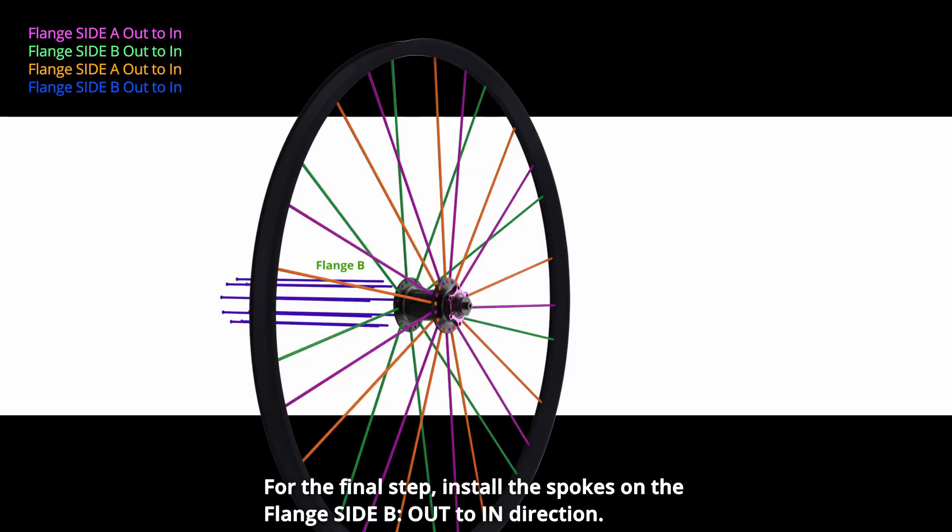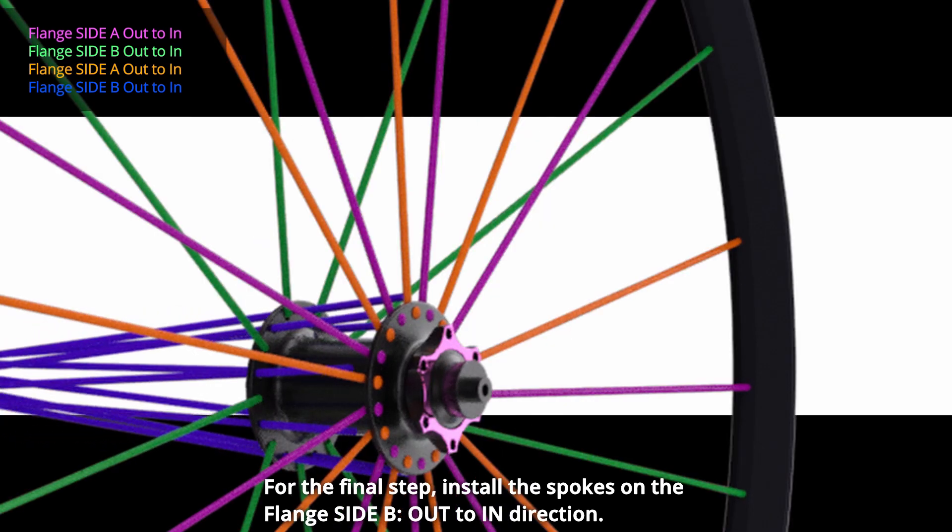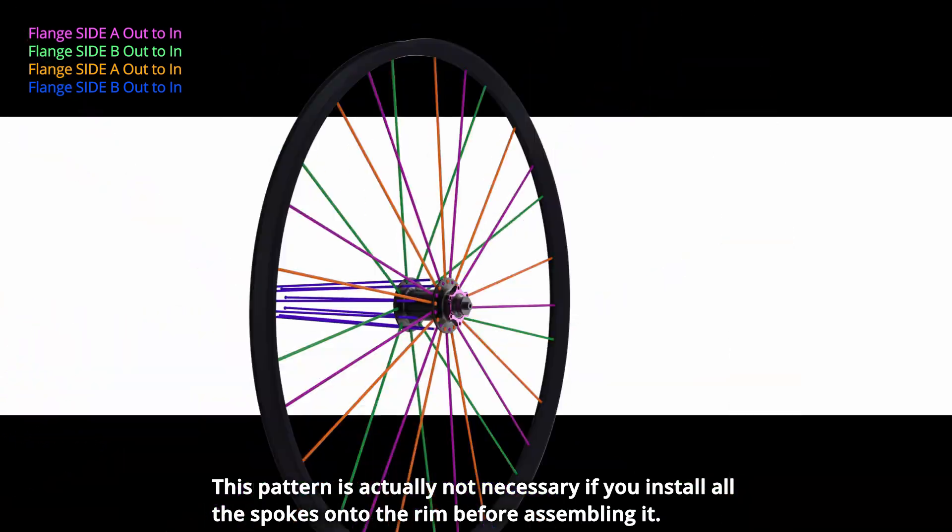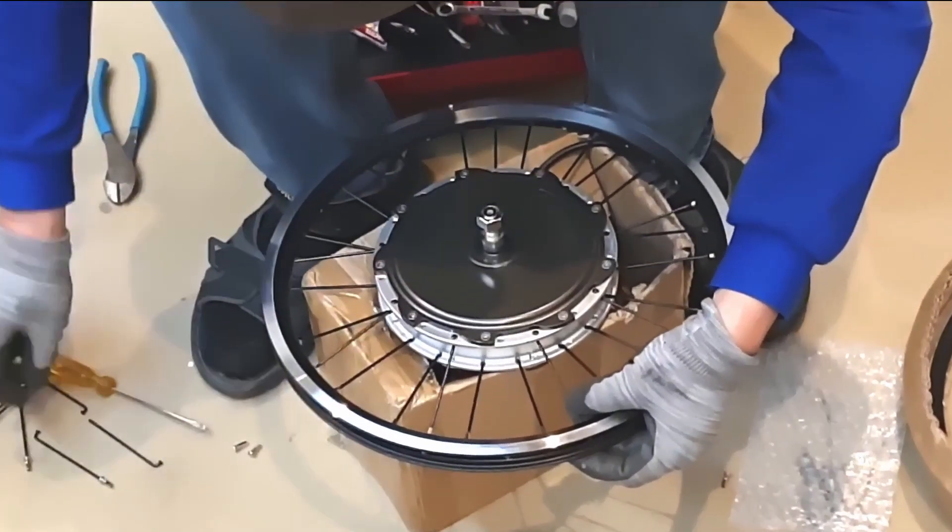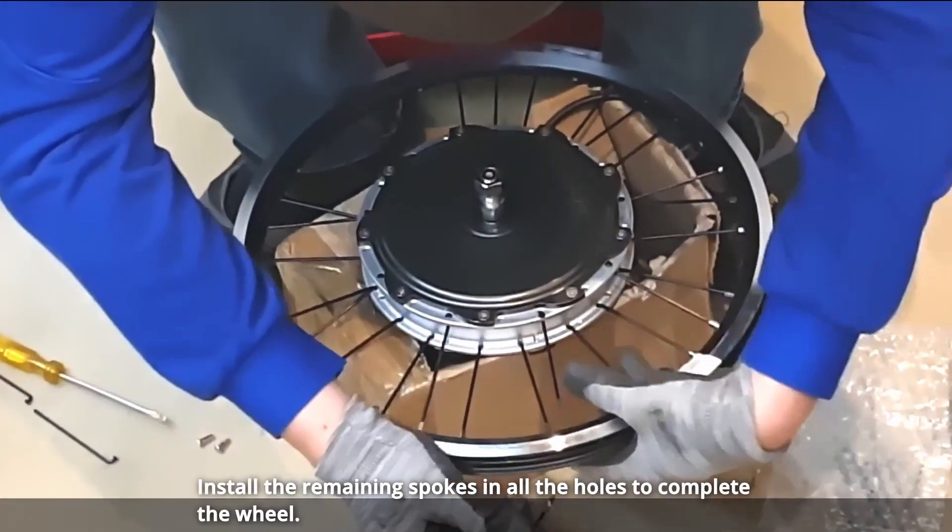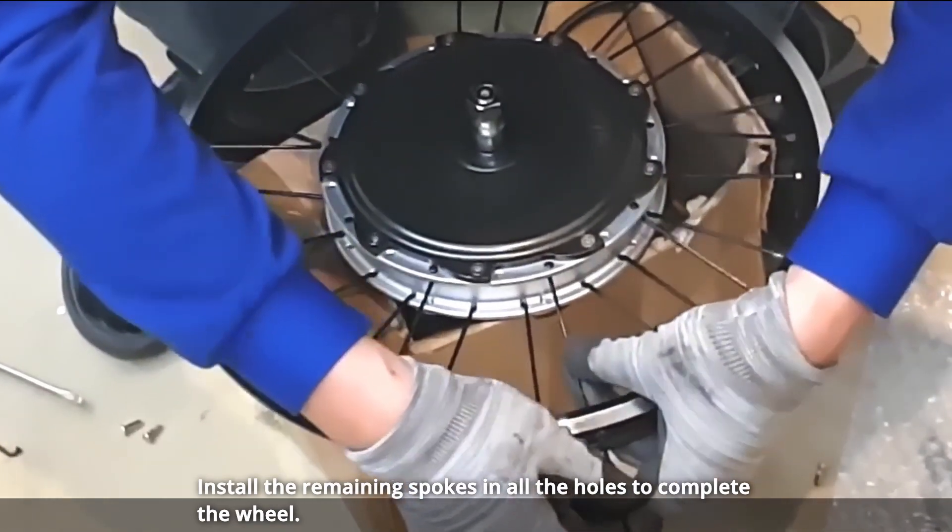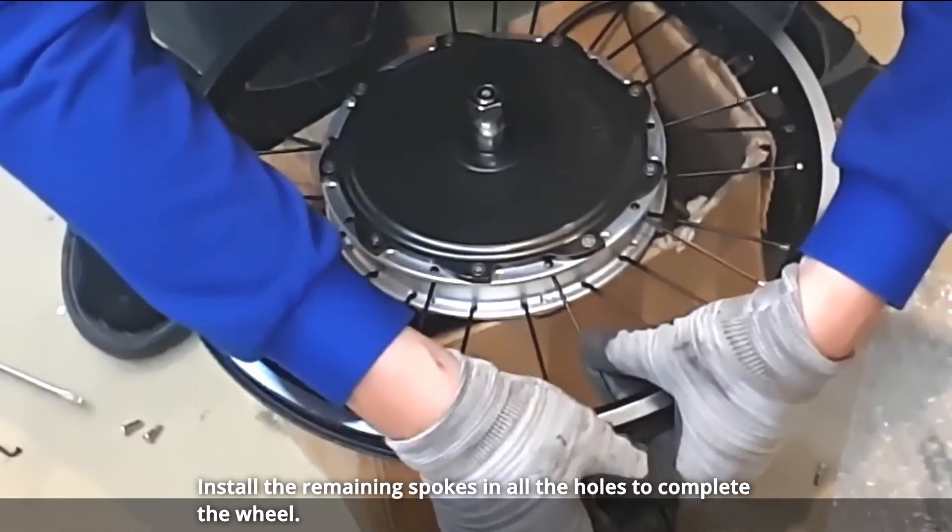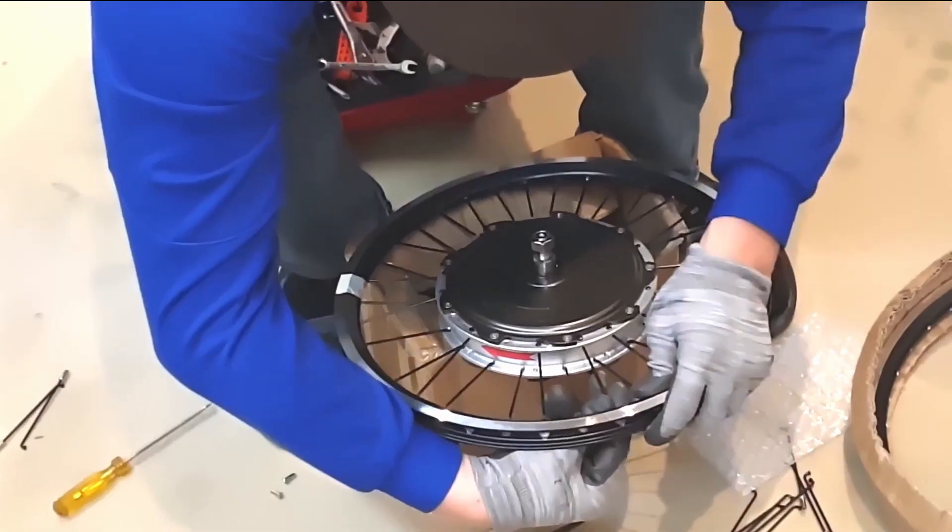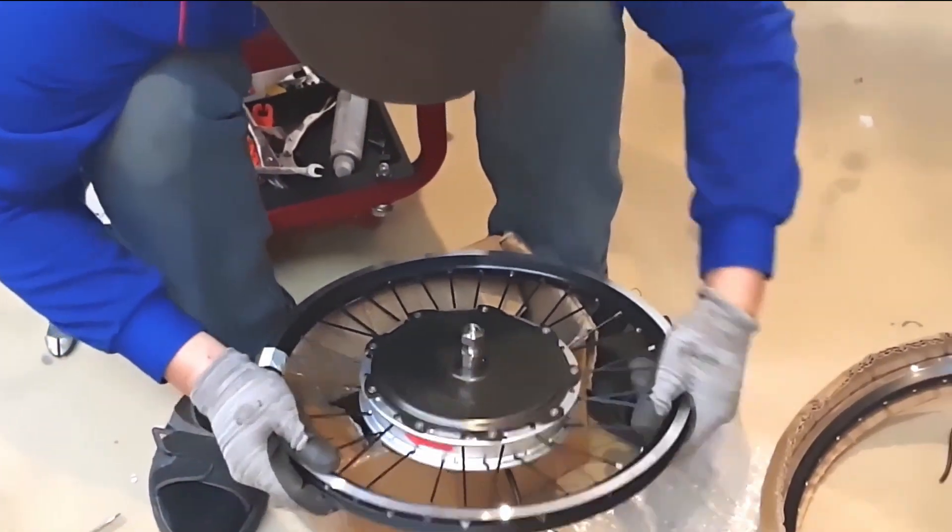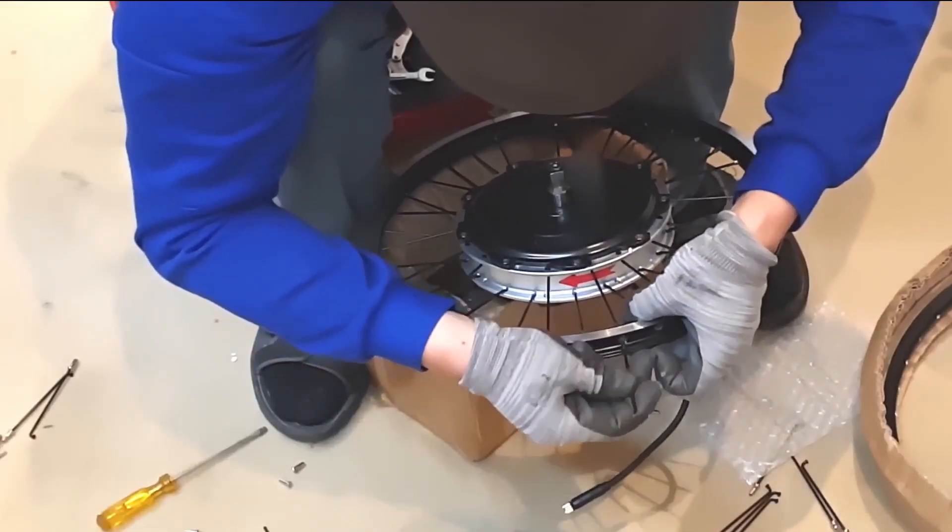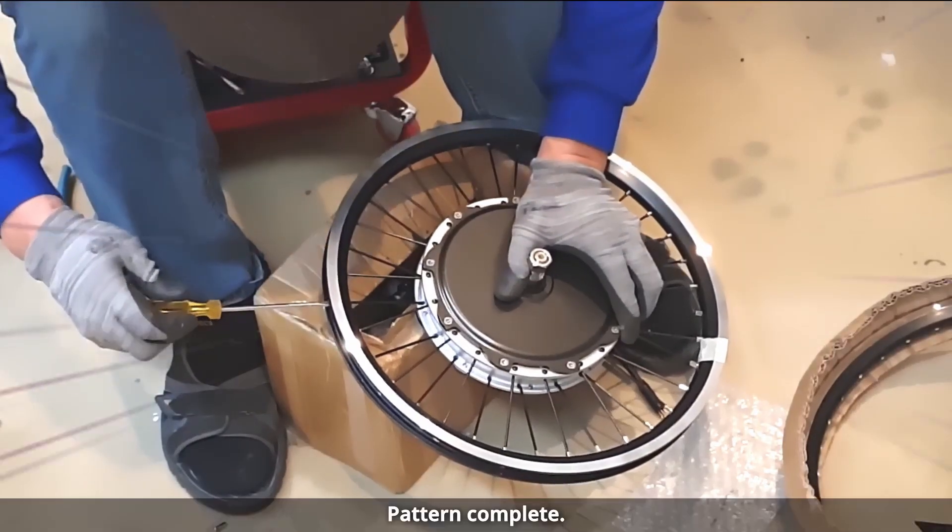For the final step, install the spokes on the flange side B out to in direction. This pattern is actually not necessary if you install all the spokes onto the rim before assembling it. Install the remaining spokes in all the holes to complete the wheel. Pattern complete.